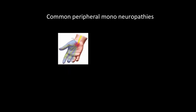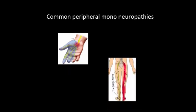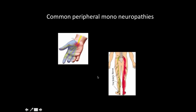The two most common mononeuropathies are carpal tunnel syndrome — with numbness, tingling, and weakness in the median nerve distribution — and lumbar radiculopathy, where sciatic nerve involvement causes numbness, weakness, and pain. In all these cases you perform sensory and motor exams, checking strength, reflexes, tone, and bulk. Specific exams include the Phalen test and tunnel test for carpal tunnel, and the straight leg raise test for sciatic nerve involvement.